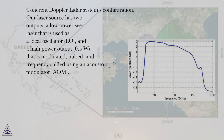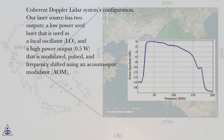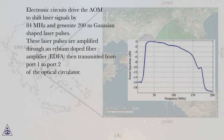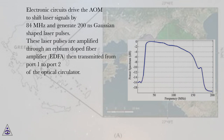Coherent Doppler LiDAR systems configuration: our laser source has two outputs — a low-power seed laser that is used as a local oscillator, and a high-power output of 0.5 W that is modulated, pulsed, and frequency-shifted using an acousto-optic modulator (AOM). These laser pulses are amplified through an Erbium-doped fiber amplifier (EDFA), then transmitted from port 1 to port 2 of the optical circulator.